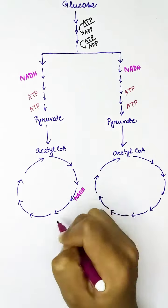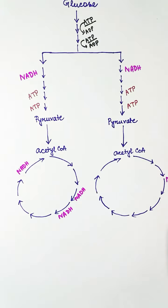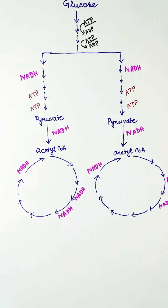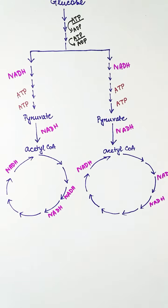In one Krebs cycle we get three NADH molecules, and from pyruvate to acetyl-CoA, one NADH molecule is also produced.